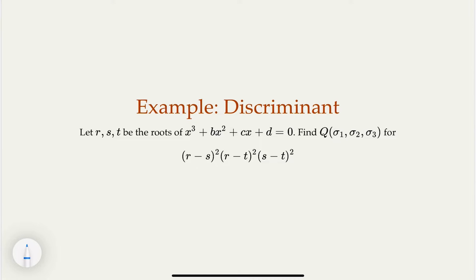Today we're going to look at how to calculate the discriminant of a cubic equation. The discriminant, if R, S, T are the roots, is the product of pairwise differences squared. This value is zero if some roots are equal to each other.